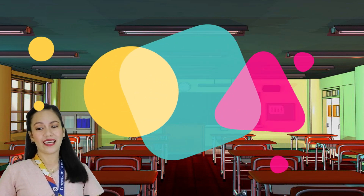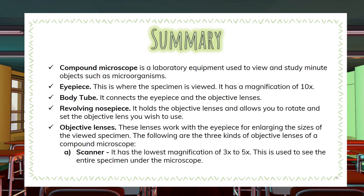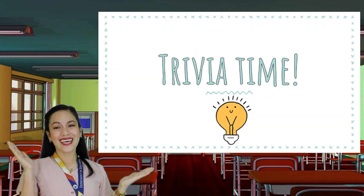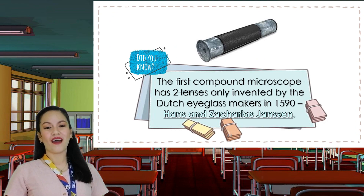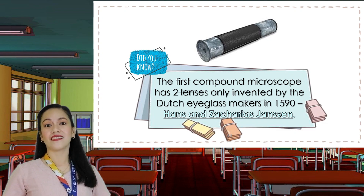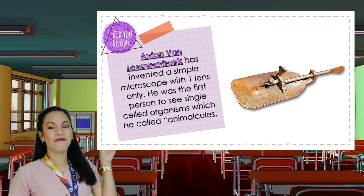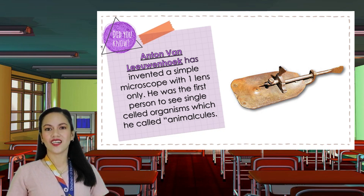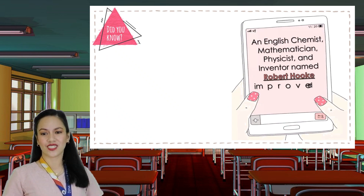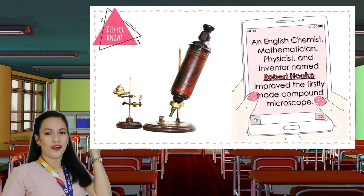This time, let us sum up our lesson and gather all that we have learned today. Trivia time! Did you know that the first compound microscope had two lenses only? It was invented by Dutch eyeglass makers Hans and Zacharias Janssen in 1590. Anton van Leeuwenhoek invented a simple microscope with one lens only, and was the first person to see single-cell organisms. English chemist, mathematician, physicist, and inventor Robert Hooke improved the first compound microscope.